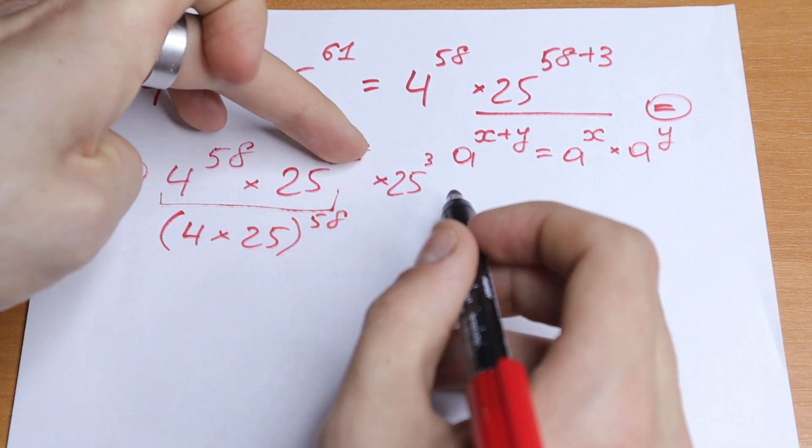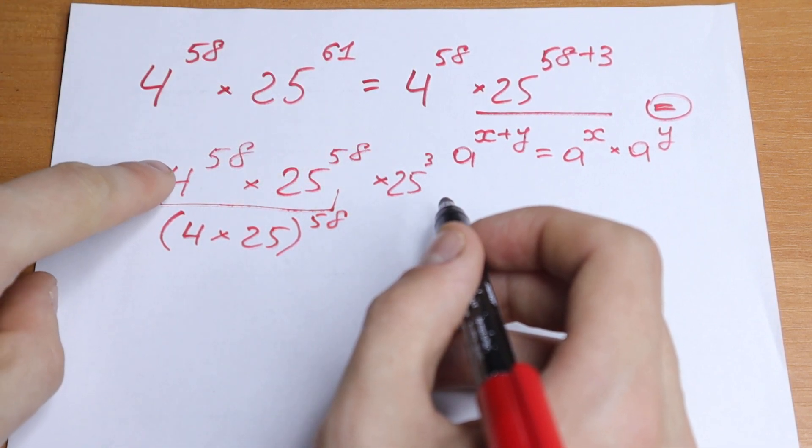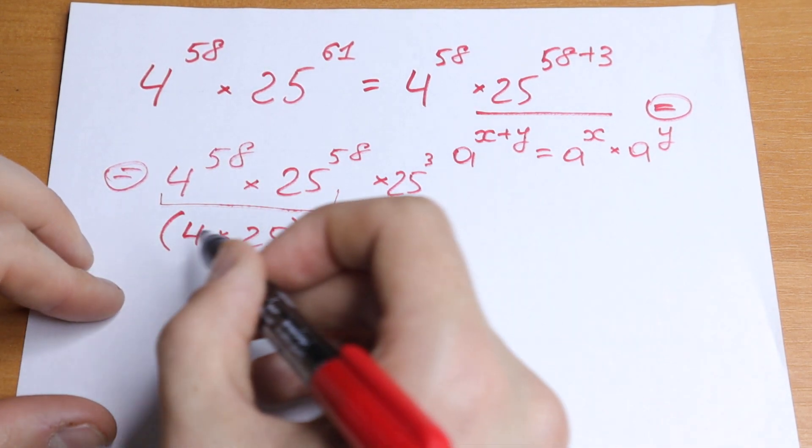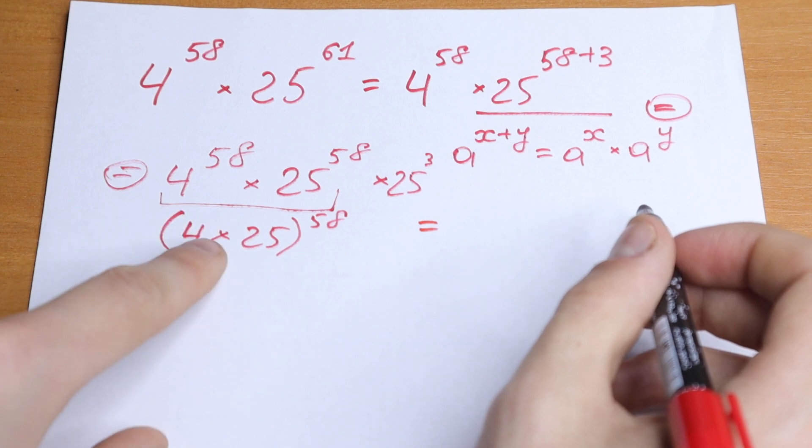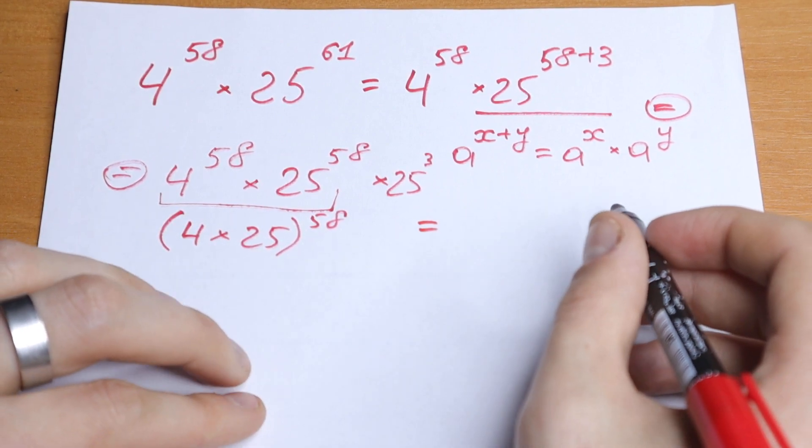So if we have same powers but different bases, and of course if we have a product, you can write it in one parentheses. So as a result we will have this product in parentheses and all raised to the power 58.